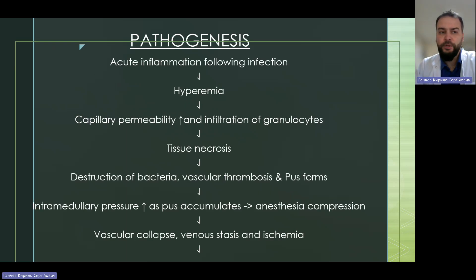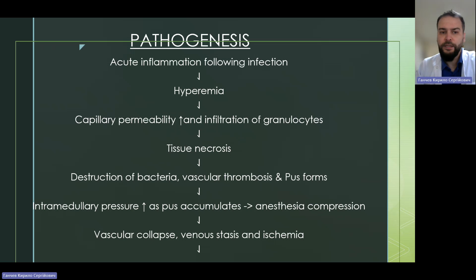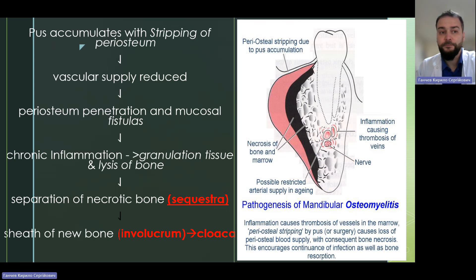Pathogenesis: we have acute inflammation following infection, then bacteremia, then capillary permeability and infiltration of granulocytes, tissue necrosis, destruction of bacteria, vascular thrombosis, and pus formation. Intramedullary pressure increases as pus accumulates, causing vascular compression, vascular collapse, venous stasis, and ischemia. This accumulates with stripping of the periosteum, muscular supply is reduced, and periosteum penetration and mucosal fistulas develop. Chronic inflammation follows with granulation tissue and lysis of bone, separation of necrotic bone called sequestra, and cells of new bone called involucrum.